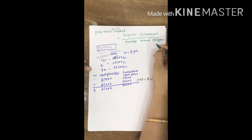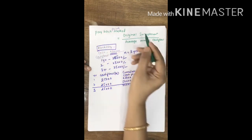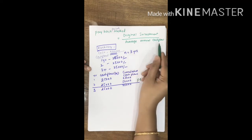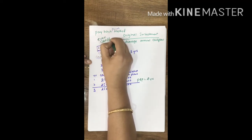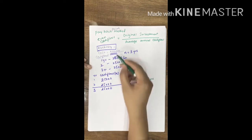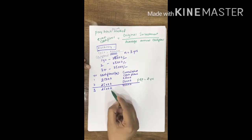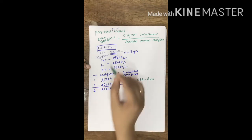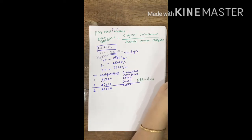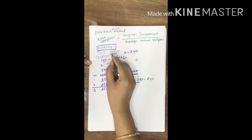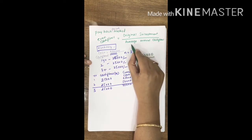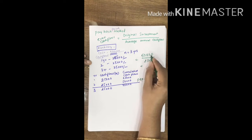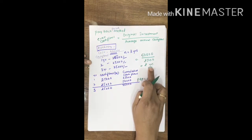You can also calculate this using the formula: payback period equals original investment divided by average annual cash flows. This formula can be applied in case of even cash flows — when an investment proposal gives you similar cash flows every year, we call it even cash flows or annuity. In this example, original investment is 50,000 rupees and every year the machinery gives 25,000 rupees, so 50,000 divided by 25,000 equals two years. The payback period is denoted in terms of years.